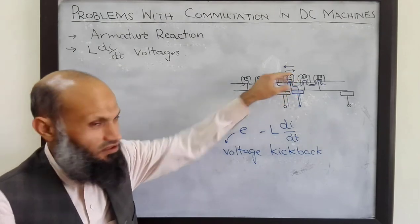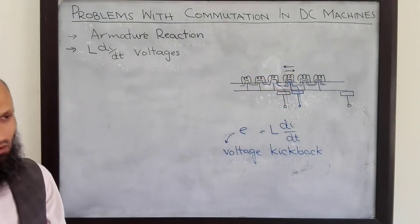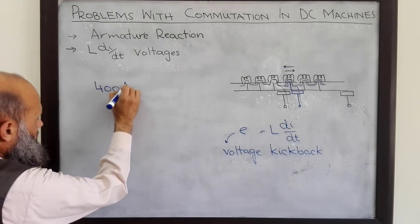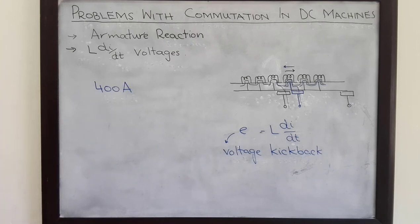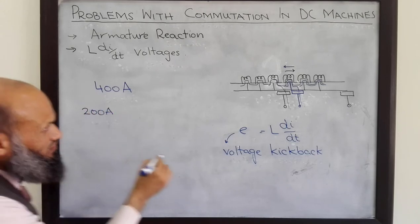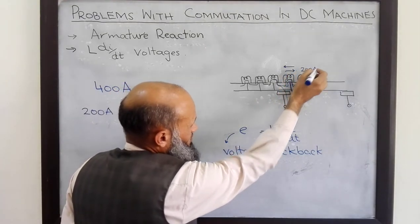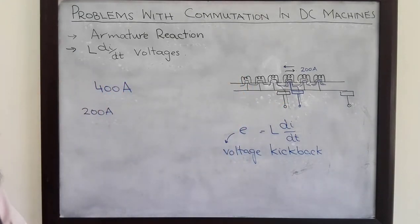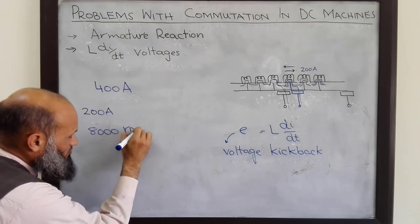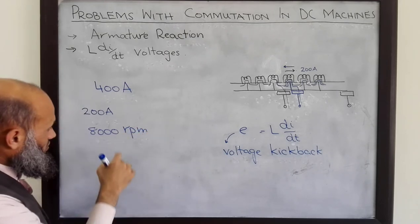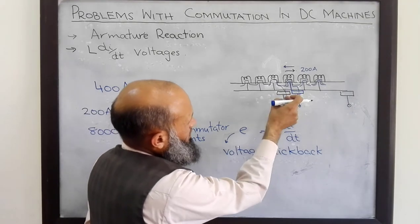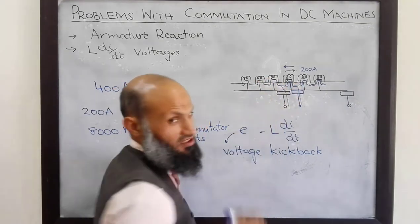To give an idea about these voltages, let's demonstrate with some numerical values. Consider a DC machine with 400 amperes and two parallel paths, so each parallel path carries 200 amperes. We assume this machine is working at 8000 RPM with 50 commutator segments. How much time will it take for the brush to move from one commutator segment to the next?